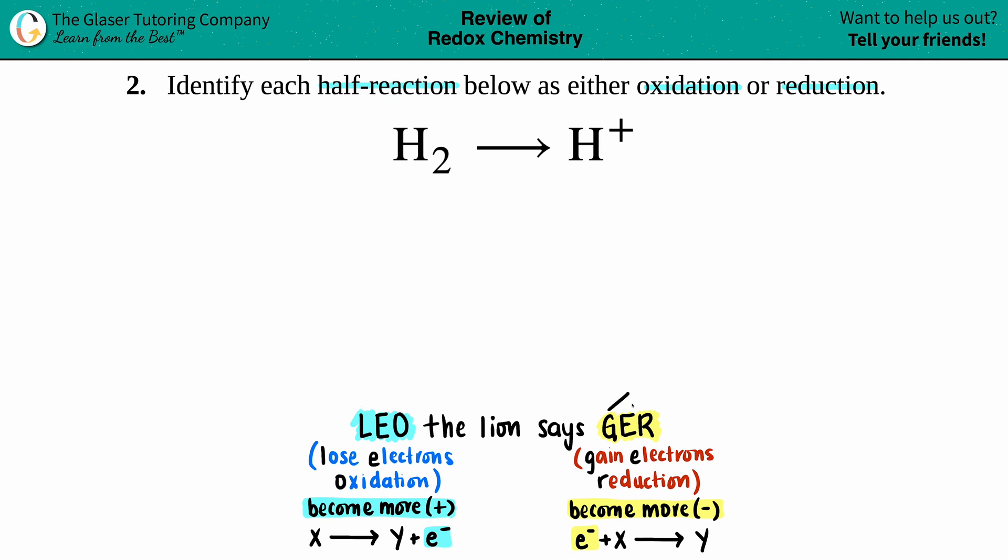On the flip side, if you're gaining electrons (GE), that's reduction. Losing electrons - if you're losing negatives, because electrons are negative - you're always going to become more positive. If you're gaining negatives, electrons are negative, you're becoming more negative.